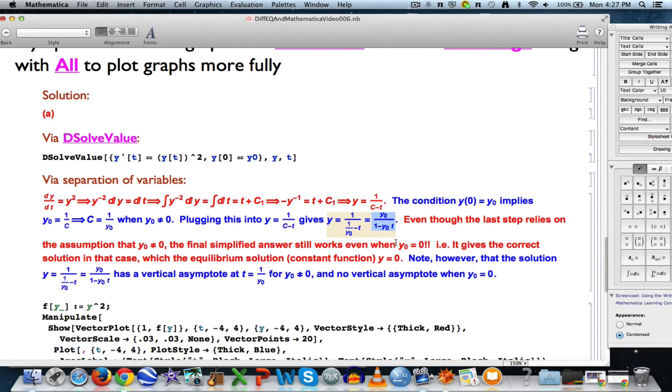this function has a vertical asymptote that's going to occur because of this algebra that you see here at t equals 1 over y0, as long as y0 is not 0. Again, if y0 is 0, then there's no vertical asymptote. It's just a horizontal line. That's the solution.